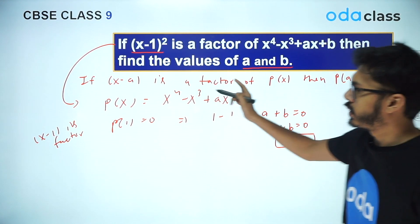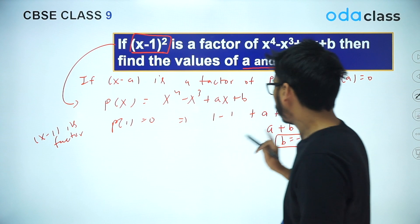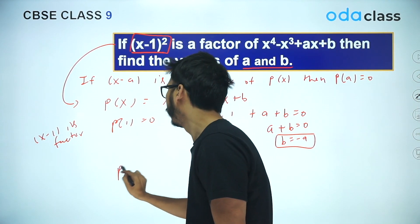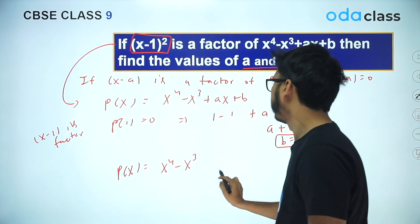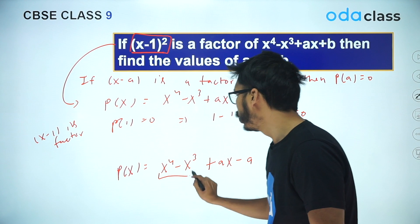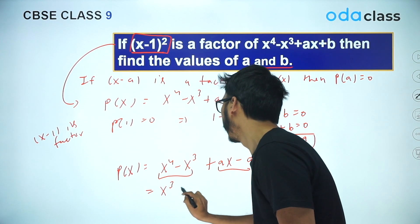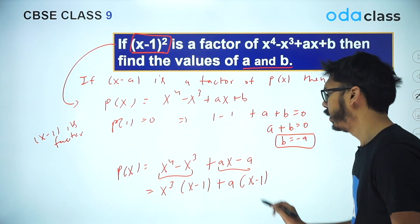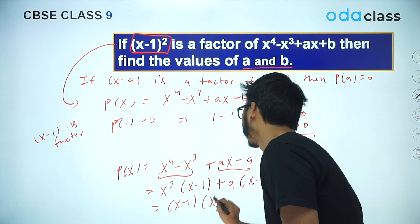Since not just (x - 1) but (x - 1)² is a factor, I'll substitute B = -A back into the polynomial. So P(x) becomes x⁴ - x³ + Ax - A. Now we can take x³ common from the first two terms and A common from the last two, giving x³(x - 1) + A(x - 1), which factorizes to (x - 1)(x³ + A).